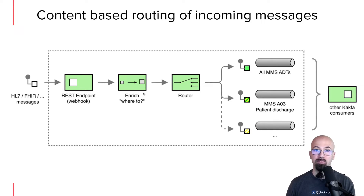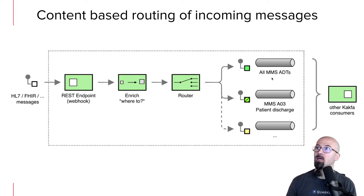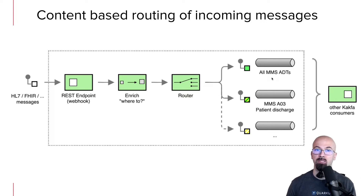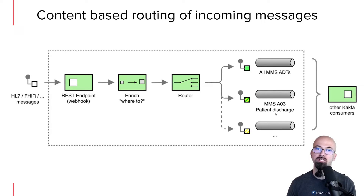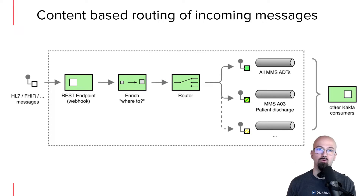With the label now set, the router knows to which Kafka topic this message needs to be dispatched, corresponding to the topic names we saw in the previous decision table. All messages from the MMS application regarding admission, discharge, and transfer of a patient go here. Other queues refer specifically to patient discharges. This is very helpful because other clients downstream can connect to the message broker on those specific topics.